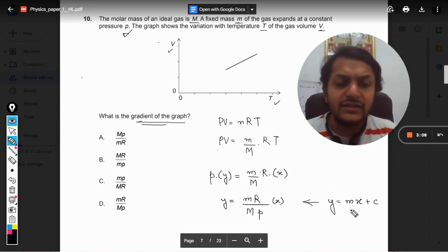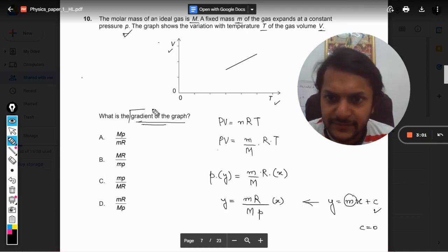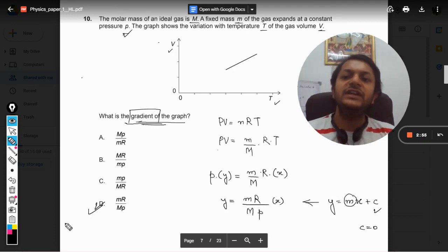we can always jump to the conclusion that the intercept will be zero and the slope, the gradient, or you call it gradient, will be equal to mR divided by M into P. So D is the correct option from A, B, C, D.